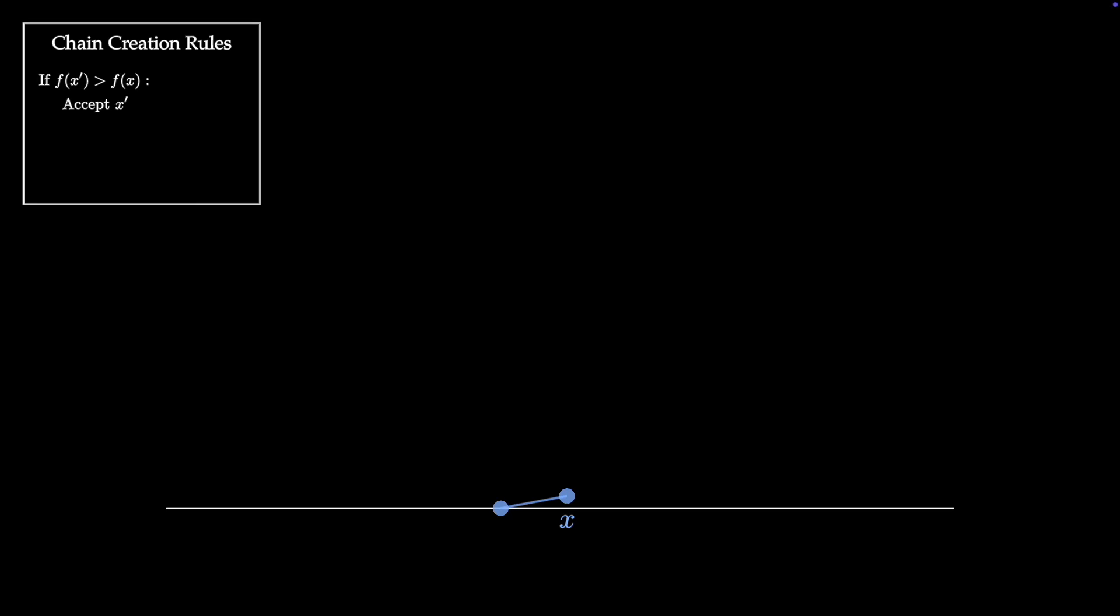We then continue to build the chain starting from this new point. We create our kernel function centered at the new point, sample a new proposed point, look at the density values, and refer back to our chain creation rules.